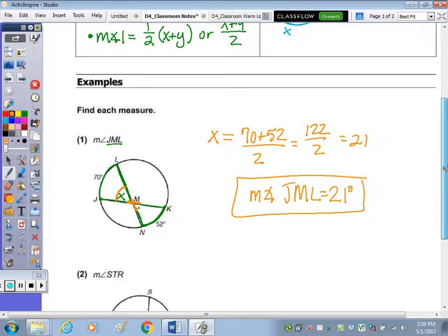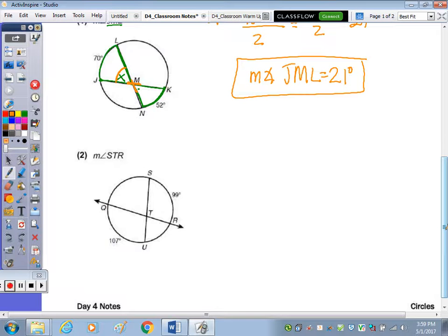Number 2, the measure of S-T-R. So if we trace S-T-R is this angle here. I'm going to call this X again. Finish tracing the cord. It stops here at U. It stops here at Q. So U to Q is this arc. And X,